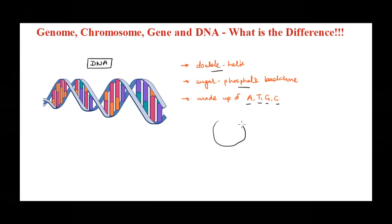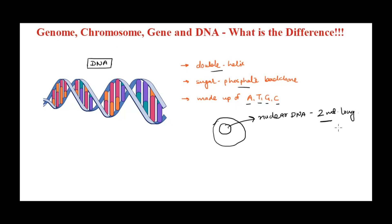One important point we should know here is when you take one eukaryotic cell — we are talking everything in terms of human — when you take DNA from one nucleus, one cell, the nuclear DNA would be around two meters long. We have talked about this in the DNA packaging video. This huge amount of DNA needs to fit inside a tiny nucleus, maybe around five to ten microns in size, so it has to undergo a packaging strategy. We've seen how the nucleosome is formed and how it is arranged in chromosomes.